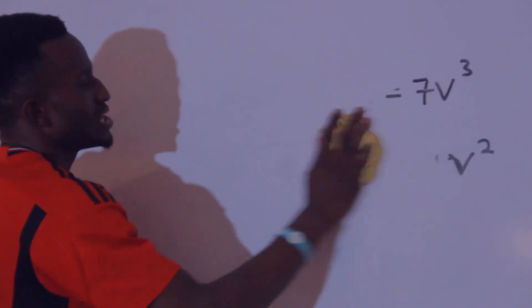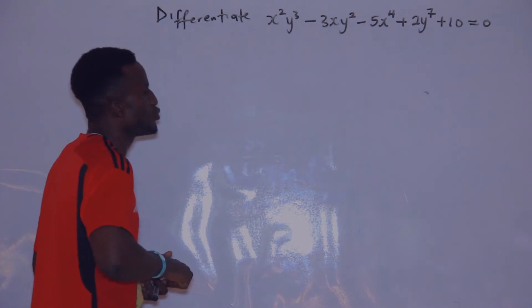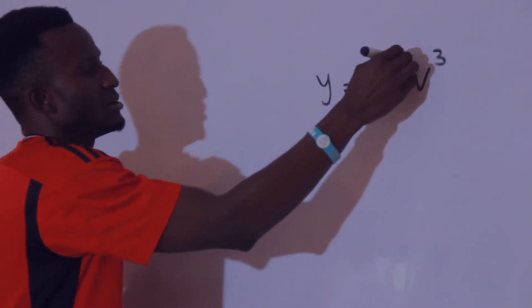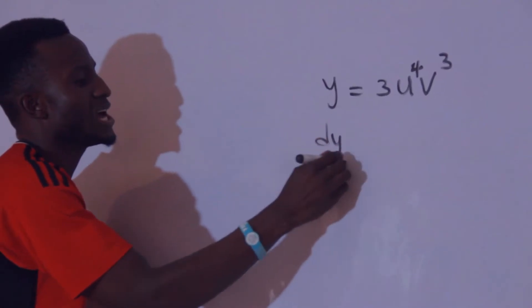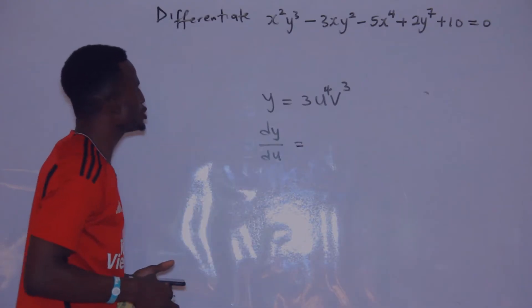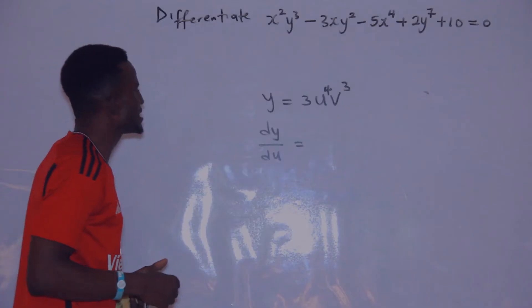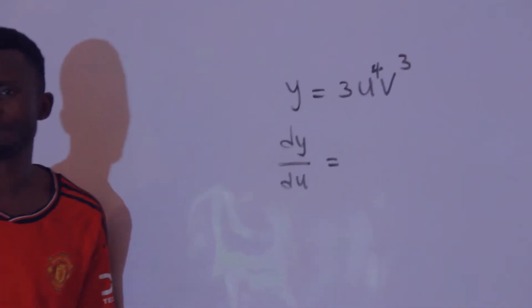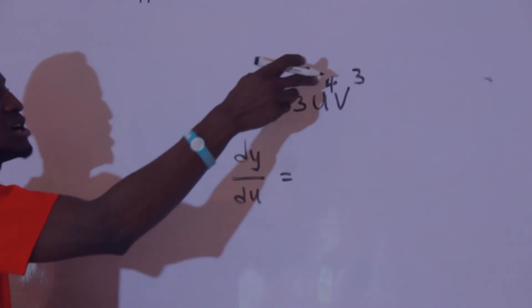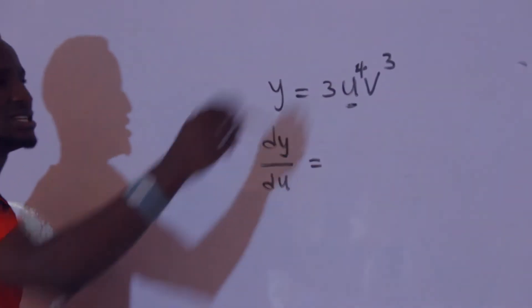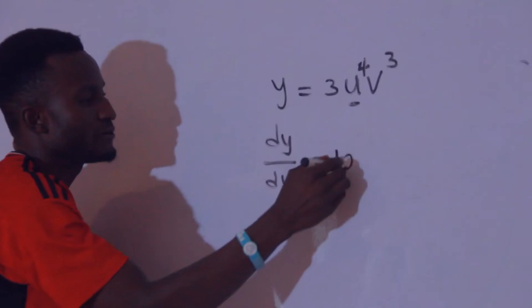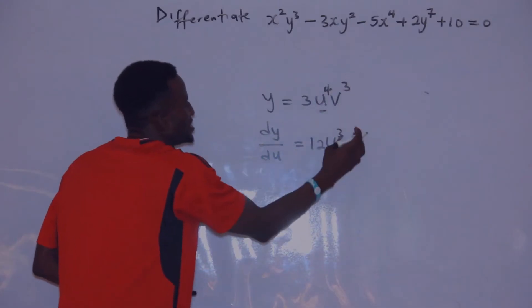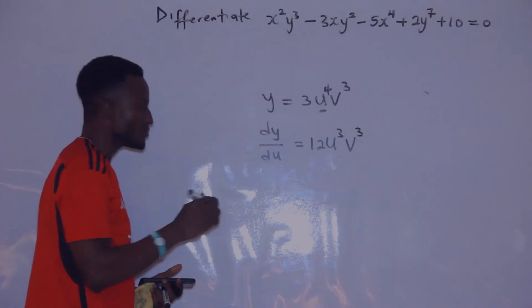Consider this equation: if you are given y equals 3u raised to the power 4 times v raised to the power 3, and asked to find dy/du, you target u. You still include v because the sign between u and v is multiplication. So dy/du is 4 times 3 equals 12, then u raised to the power 3, and v raised to the power 3 stays.